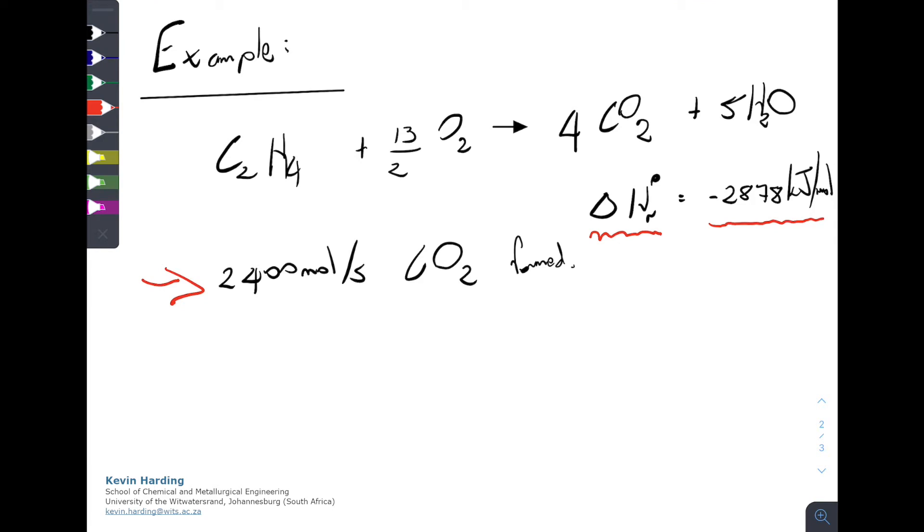So the first thing to notice is that on this equation, the delta H of reaction is given as a per mole. So because it's given per mole, what that means is it comes with this reaction. So it means that for one mole of C2H4, 13 on 2 O2s, four carbon dioxides and five hydrogens, that's how many kilojoules are required for the heat of reaction.